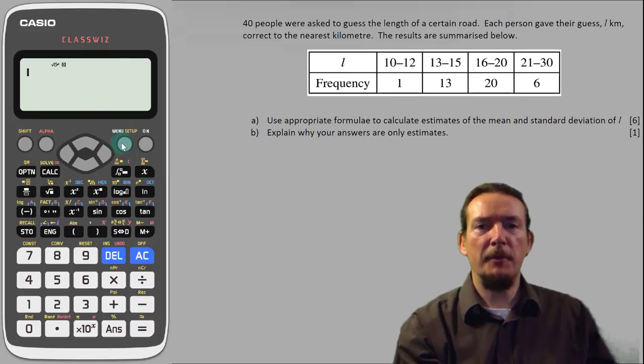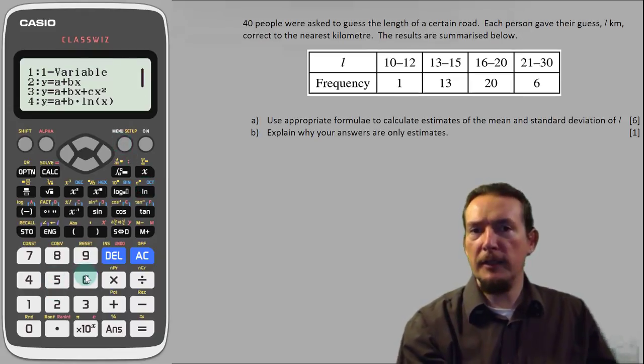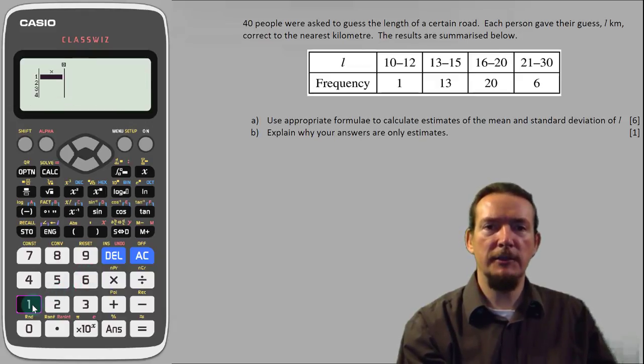To get into stats mode press the menu button followed by 6. We are given a range of choices here and we want the first one, one variable, so press 1.